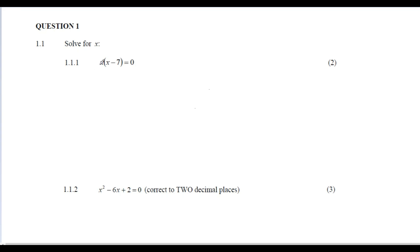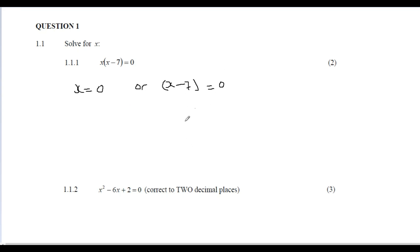So in Case 1, if x equals zero, we're done — x = 0. In Case 2, we set x - 7 = 0 and add seven to both sides, giving us x = 7. Easy two marks — congratulations!